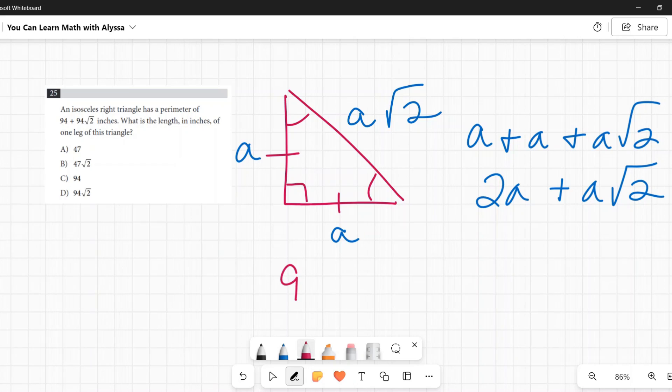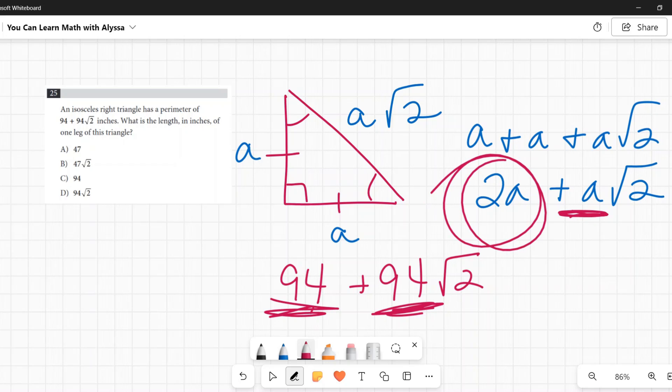Now we're told this triangle has a perimeter of 94 plus 94 times the square root of two. You might immediately think, okay, so that a square root of two corresponds to that. Does it though? Because if a times the square root of two is this, then that a would be 94, and this term should be equal to two times 94. But it's not.